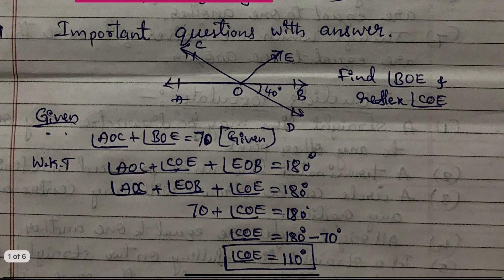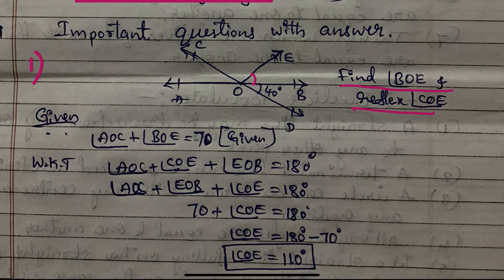First question: find angle BEO and reflex angle COE. The given information is angle AOC plus angle BOE equals 70 degrees. We know that angle AOC plus angle COE plus angle EOB equals 180 degrees, because it is a straight line and a straight line makes 180 degrees.